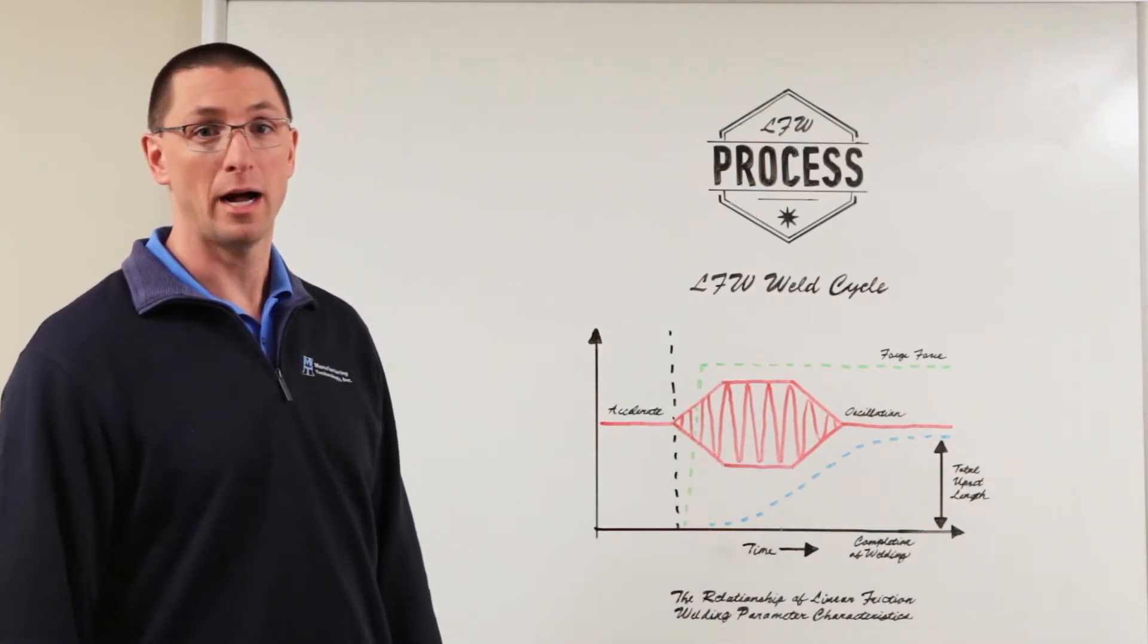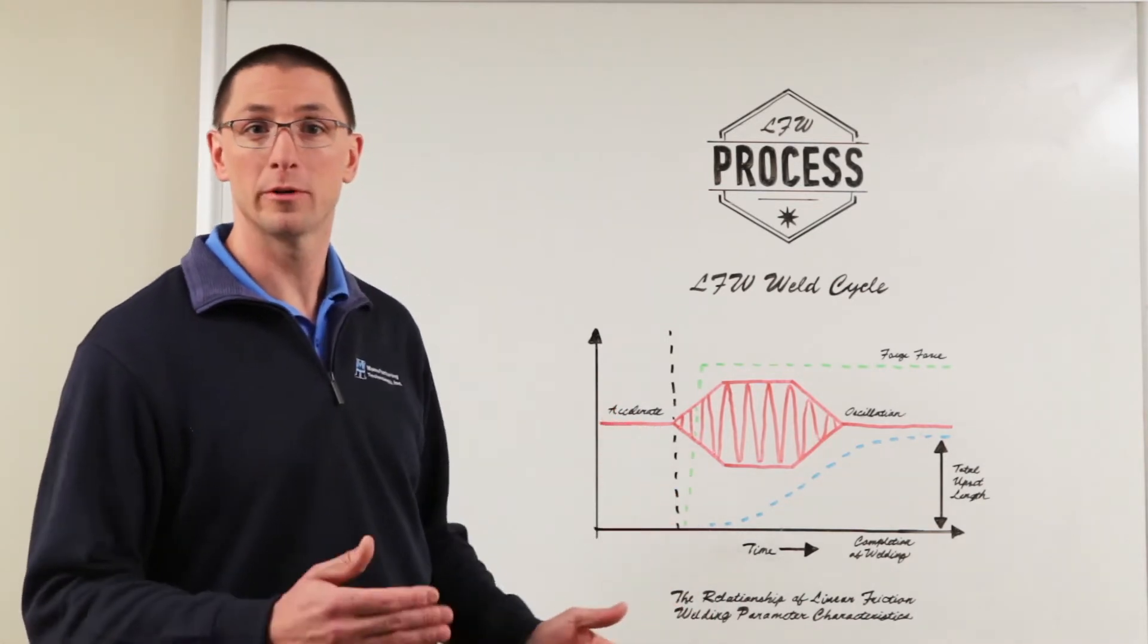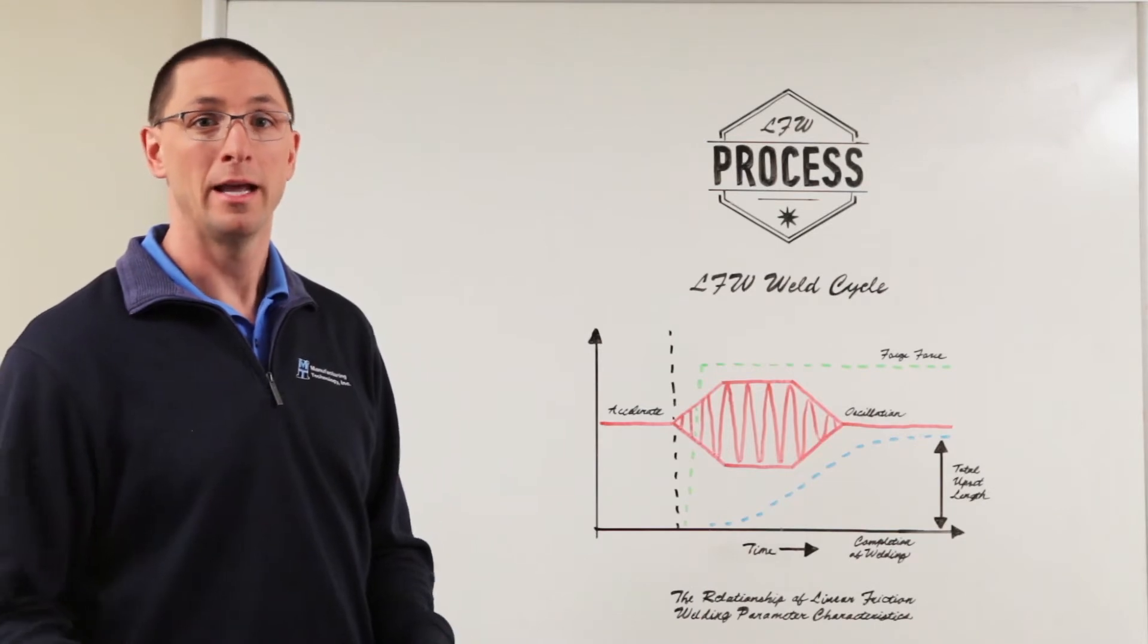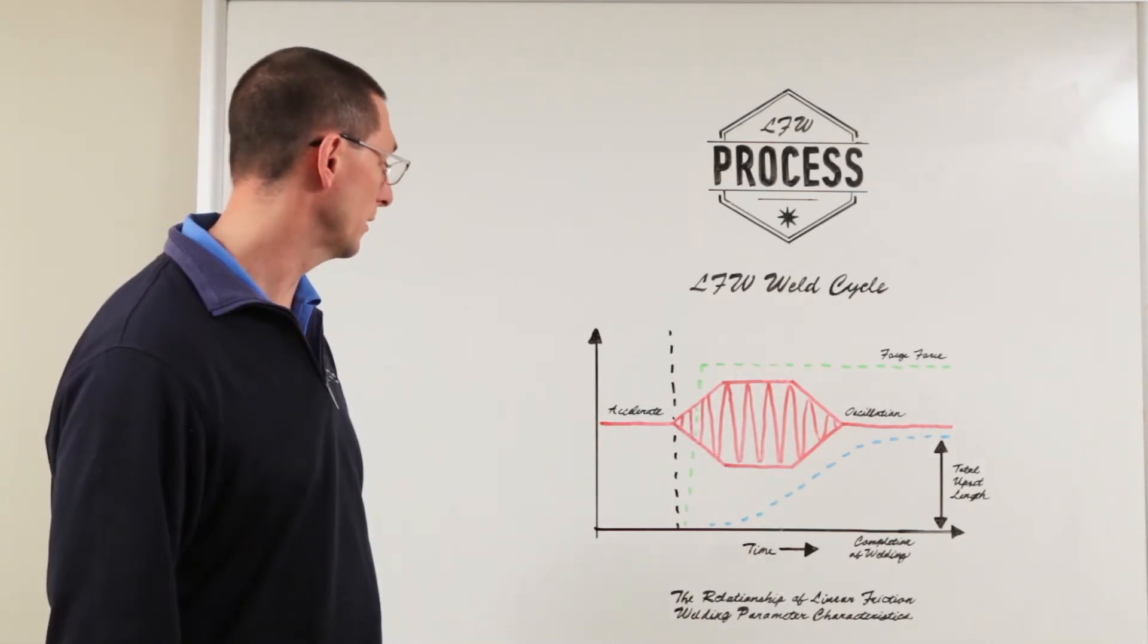There are two components of the oscillation that drive this energy input. There is a frequency, the number of times that we oscillate per second, and the amplitude, which is the distance that we're going to travel as we're oscillating.